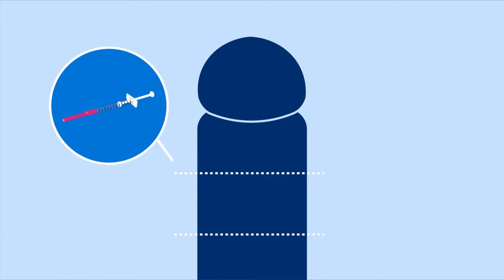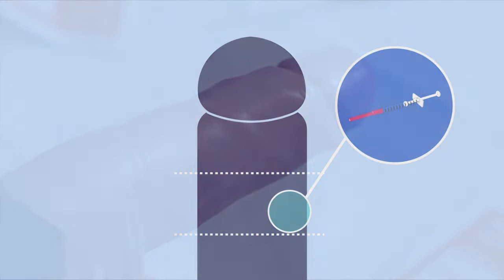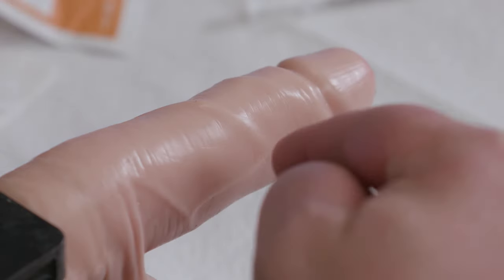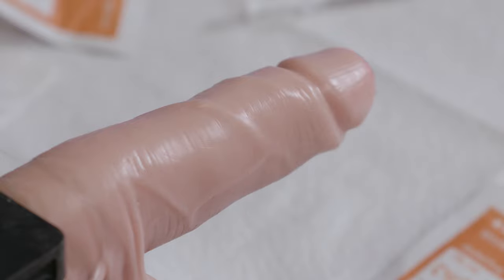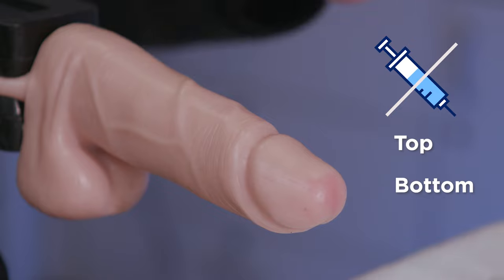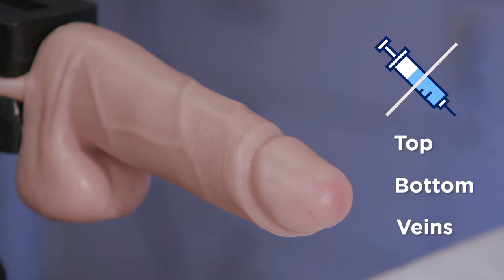You'll give the injection in the middle part at the 10 o'clock position on the left side or the 2 o'clock position on the right side. Switch sides each time you give yourself an injection. This helps protect the tissue. Never inject straight into the top or bottom of your penis and avoid any veins you can see or feel. Injecting into a vein could cause a large bruise.